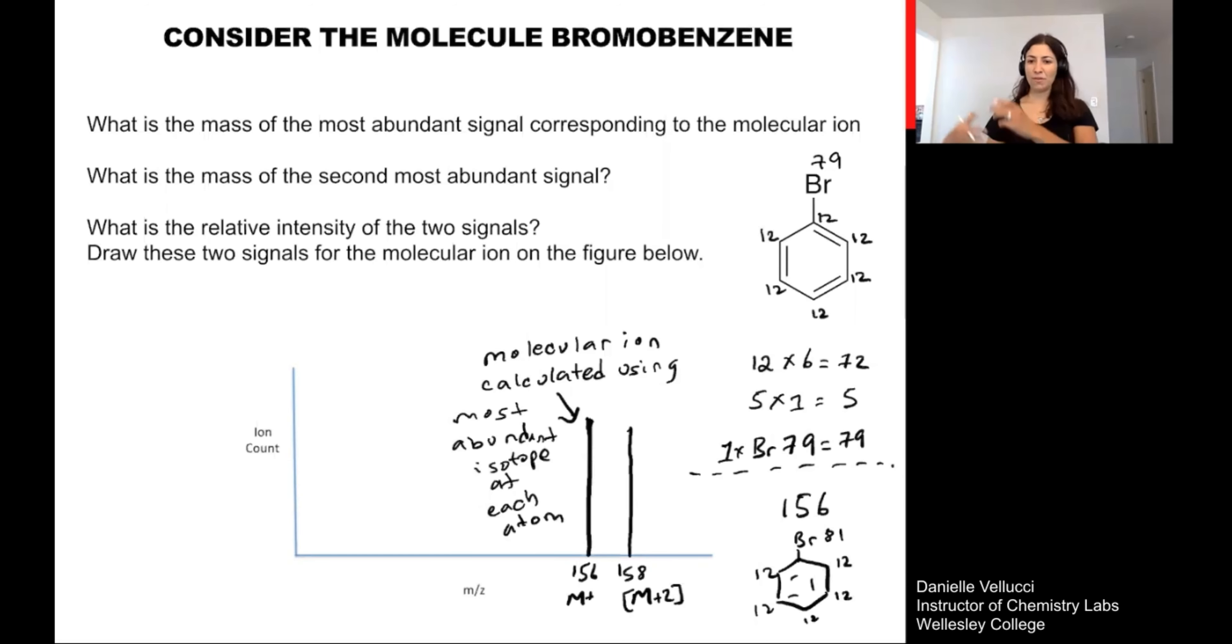And of course, we could keep going. Now we could think about, what about the C13 incorporation here? So let me use my Br79. There is a possibility if I wanted to think about really what this signal is likely to look like, I could have Br79, but I have the potential to have C13 incorporation within my ring. If I have one C13, my mass will be 157. So I would expect a signal right in between the 156 and the 158. When we think about how tall that signal is, it should be much shorter than the 156 or the 158 because C13 is only a 1% abundance when we consider the carbon atom.